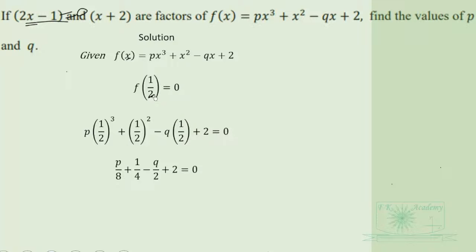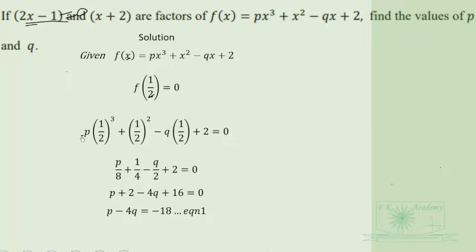We simplify: (1/2)³ times p gives p/8, and (1/2)² gives 1/4. We then multiply through by 8, the LCM, and simplify further to get p minus 4q equals negative 18, rewriting in standard form for simultaneous linear equations in two variables.